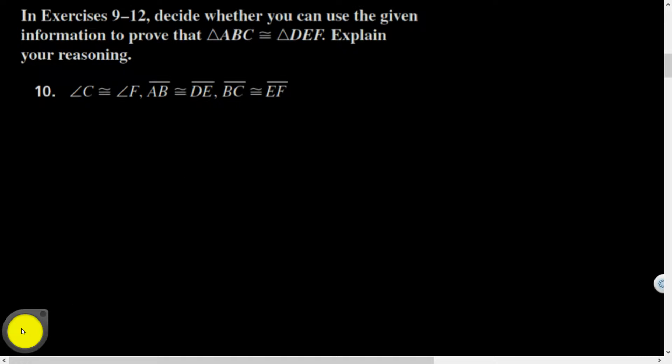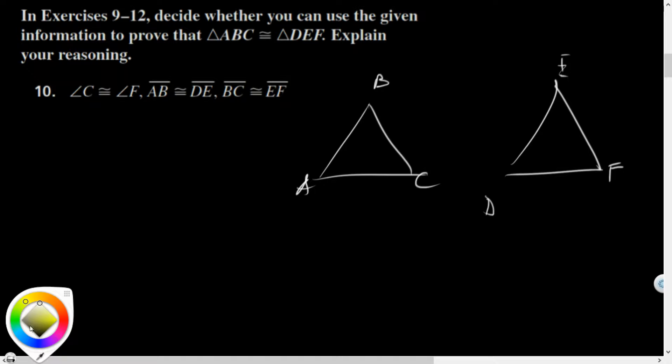I like this problem; it's a little less visual, but you could draw a picture. We have triangle ABC and triangle DEF. They gave us some factoids: angle C is congruent to angle F, AB is congruent to DE, and BC is congruent to EF. Decide whether you can use the information to prove those triangles congruent.